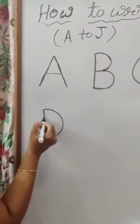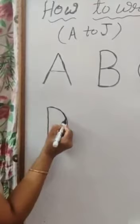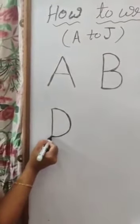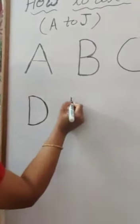Again D: straight line and one half circle which makes D. Now next letter is E: straight line, one slanting line at the top, one slanting line at the bottom, and one slanting line in the middle — which makes E.